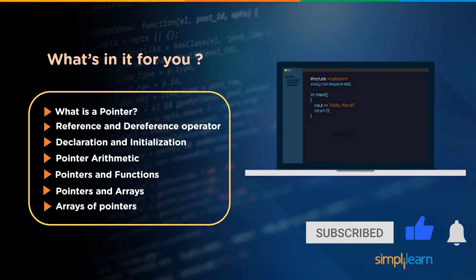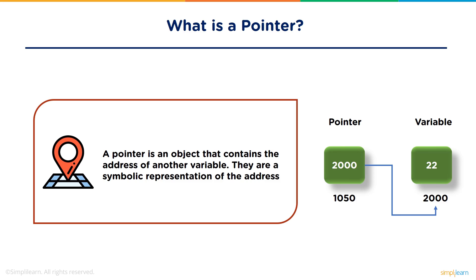A pointer can be defined as a variable that contains the address of another variable. It basically stores the memory address, which means it points to an address of a particular value. Like a regular variable, pointers have a data type also.